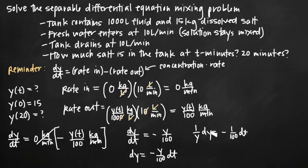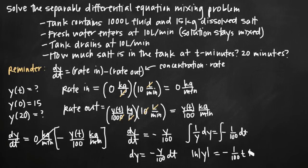We integrate both sides. On the left we get the natural log of the absolute value of y. On the right we get −(1/100)t plus a constant of integration C. Technically we add constants to both sides, but they consolidate into a single constant C on the right, so it's standard shorthand to write it there only.